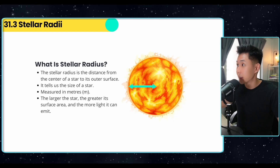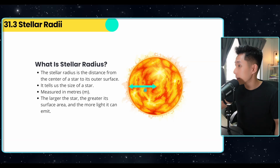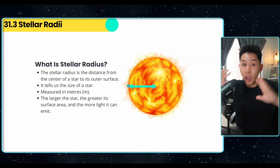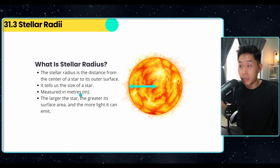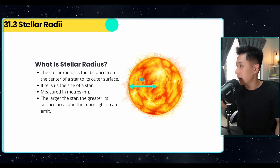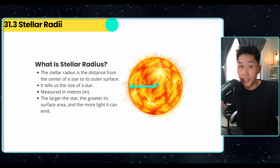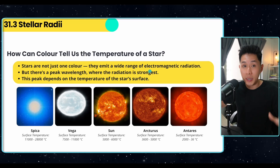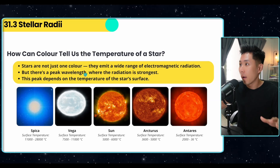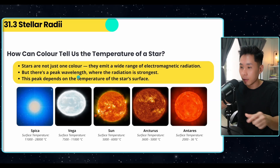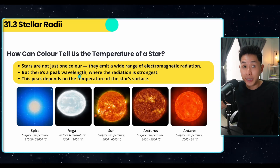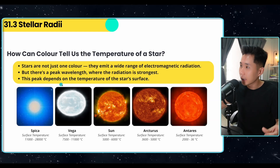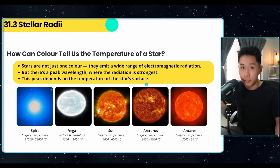Now let's move on to stellar radius — the distance from the center of a star to its outer surface. It tells us how big the star is, measured in metres. The larger the star, the greater its surface area, and hence the more light it can emit. All stars emit a wide range of electromagnetic radiation, but there's a peak wavelength — the EM radiation with the highest intensity — and this peak depends on the surface temperature of the star.